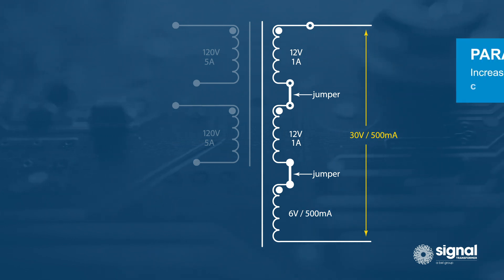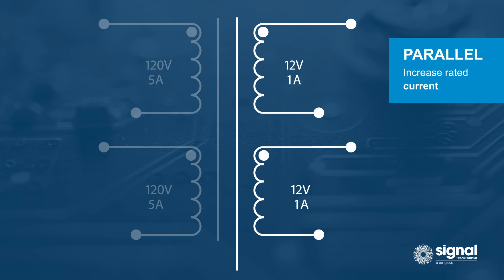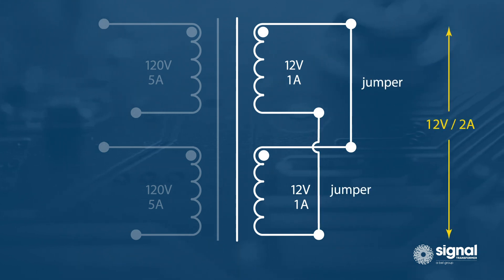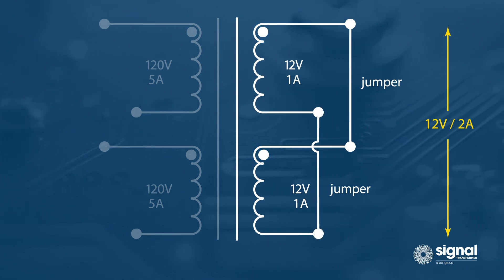Multiple windings can also be connected in parallel to increase the rated current without changing the voltage. Connecting two 12-volt 1-amp secondary windings in parallel by connecting starts to starts and ends to ends produces a 12-volt 2-amp output.